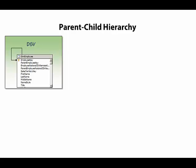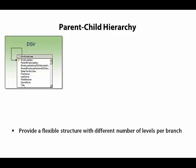Here, the parent-employee key column has a foreign key relationship to the primary key column, employee key. The benefit of this structure is that we don't have to know in advance how many levels exist in the hierarchy, nor do we need to create a level explicitly in the dimension.